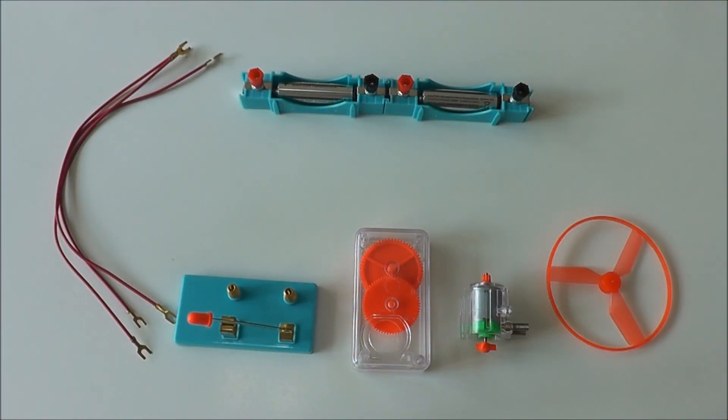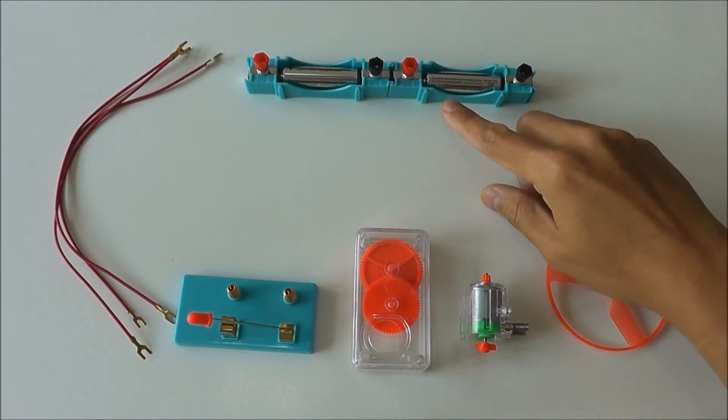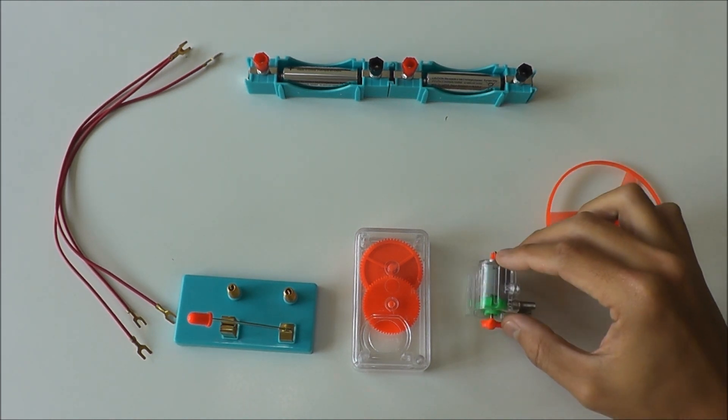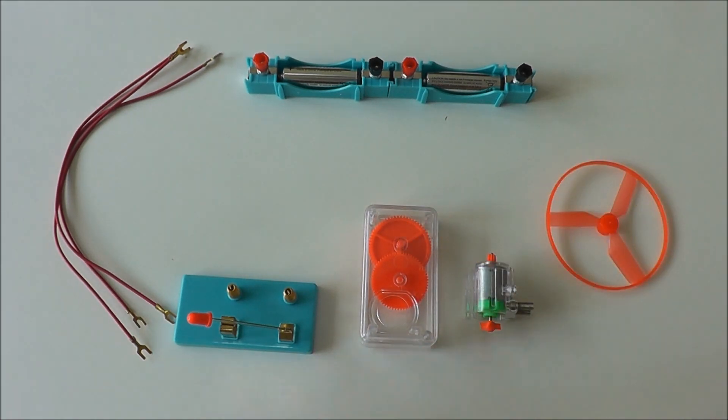In this lesson, we're going to learn how to connect a motor circuit. These are the components that we require: two battery holders with batteries connected in series, a fan blade, a motor, a gearbox,